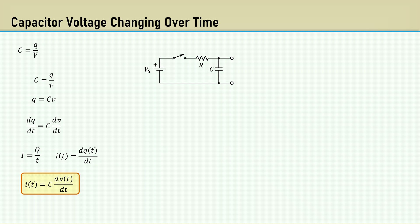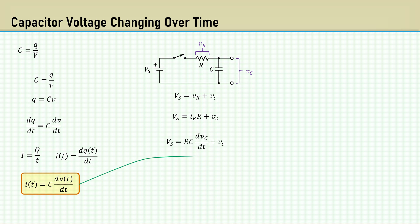Here is a circuit with a battery, VS, and a switch that applies current to the capacitor through a resistor. We have the voltage across the resistor and the voltage across the capacitor. We can write Kirchhoff's voltage law as VS equals VR plus VC. Then replace VR with the current through the resistor, I sub R, times the resistance R. Since the resistor and capacitor are in series, current in the resistor is the same as the capacitor, so we can replace I sub R with our equation for the changing current in the capacitor.